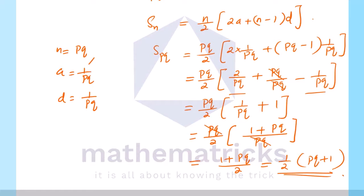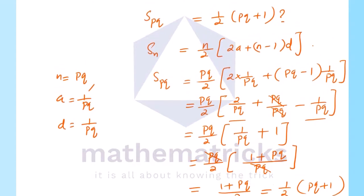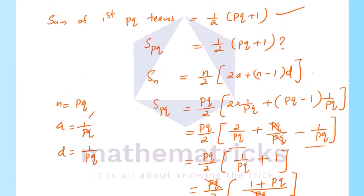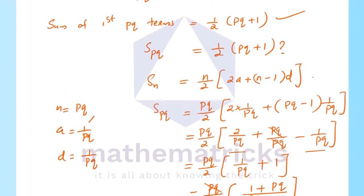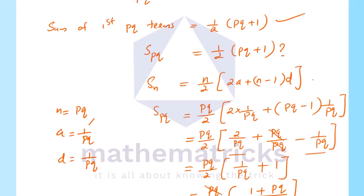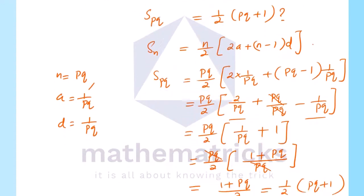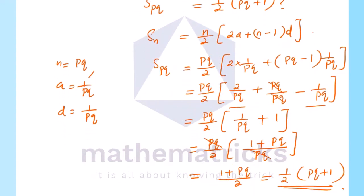Therefore the sum of the first pq terms is ½ × (pq + 1). Hence proved.